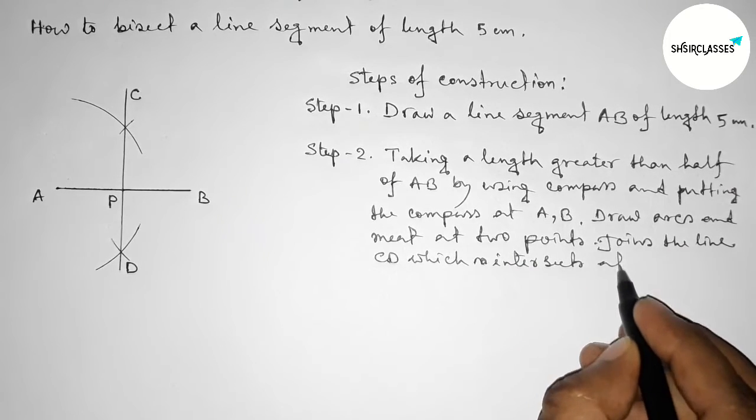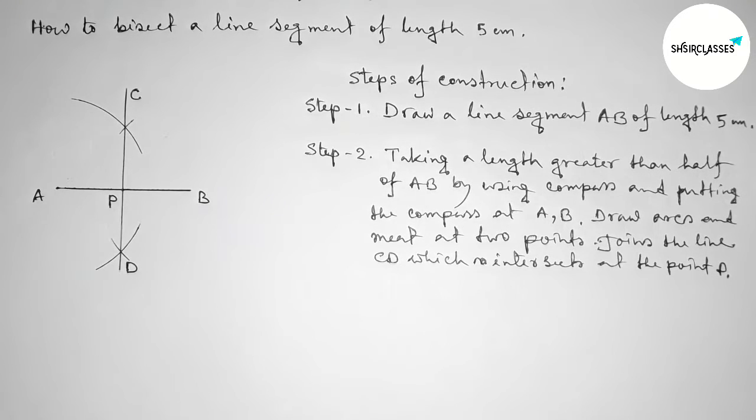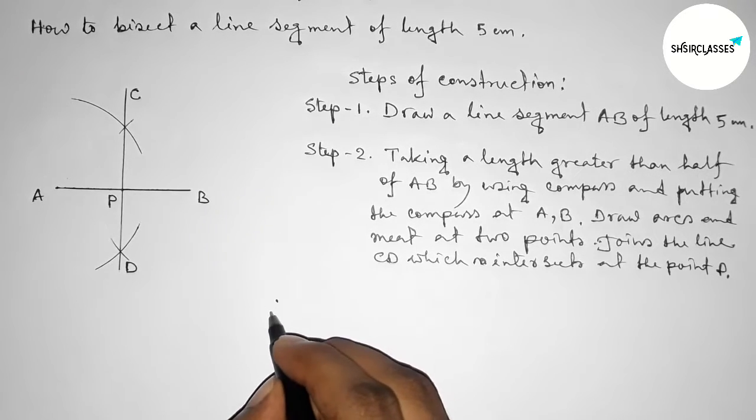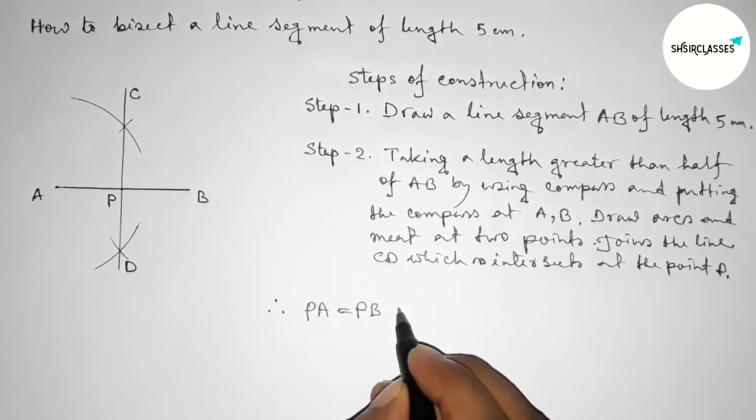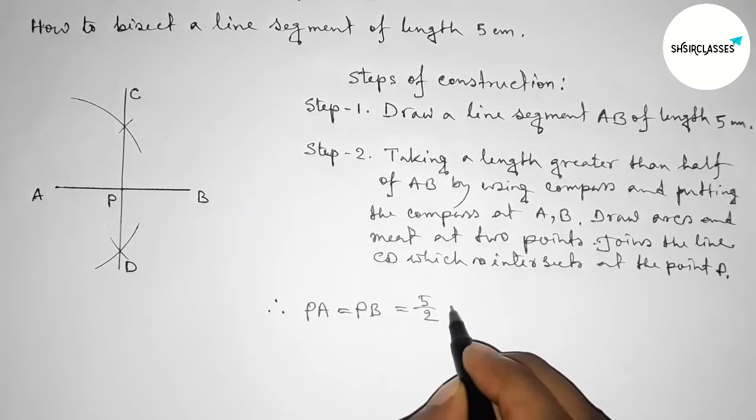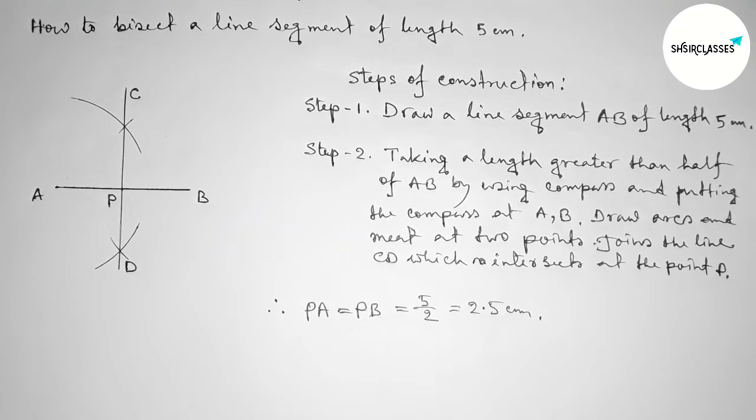Therefore the lengths PA and PB are equal. So PA equals to PB equals to five by two, which is obviously 2.5 centimeters.